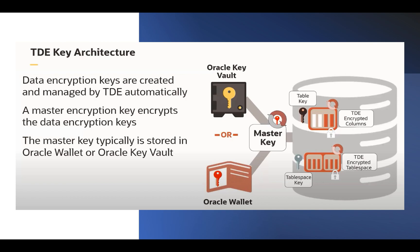The tablespace key is stored inside the database. The table key, related to column-level encryption, and the tablespace key, related to tablespace-level encryption, are both stored inside the database. The tablespace key is specifically stored in the control file and also in the data file headers — so at two places — or you can say it is stored in the data dictionary. This tablespace key is also known as DEK, or Data Encryption Key.